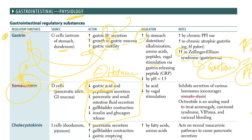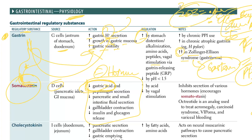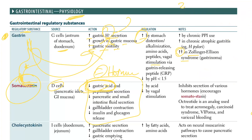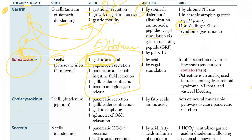In ZES you will have abdominal pain, chronic diarrhea, and ulcers - very commonly ulcers beyond the duodenal bulb or in the jejunum. Whenever you see ulcers beyond the duodenal bulb or in the jejunum, think ZES. You also have heartburn. Treatment is surgery; if refractory to PPI, surgery is the answer.